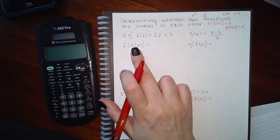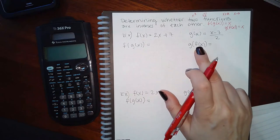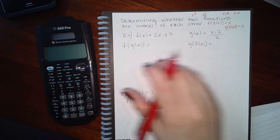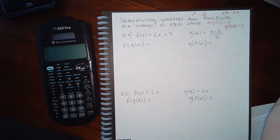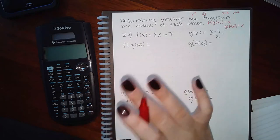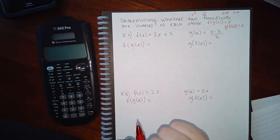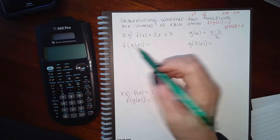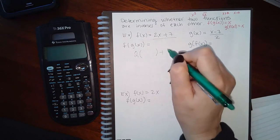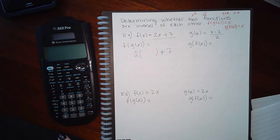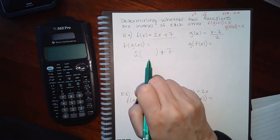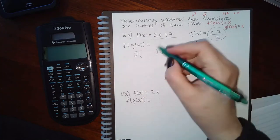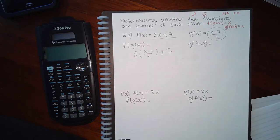To test inverses, figure out what f of g looks like and what g of f looks like. If you get just x in both cases, then the two functions undo each other and are inverses. If you get anything other than x, they are not inverses. Write the outside function but instead of x put a big blank, then put g of x inside that blank and simplify.